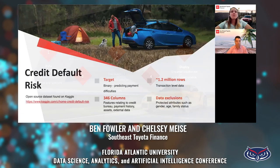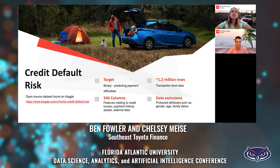For consumer privacy reasons, we decided to use an open source data set found on Kaggle for this project, as opposed to using our internal STTF data. This data is called Credit Default Risk. The target was a binary feature predicting payment difficulties. There were 346 features relating to credit bureau data, payment history, applicant assets, and a few external data inputs.